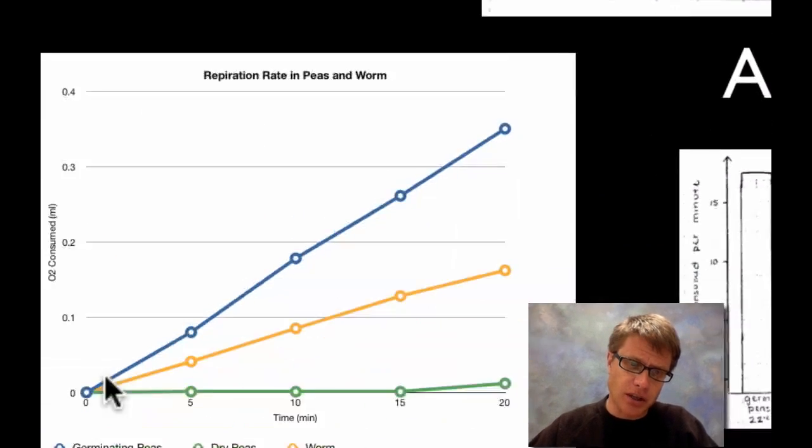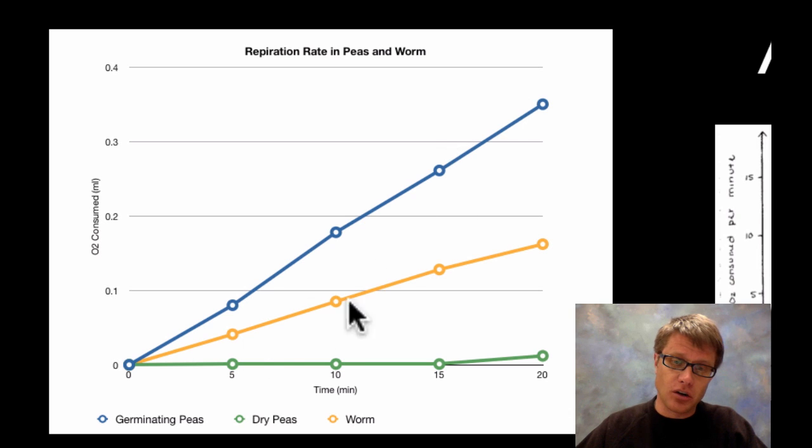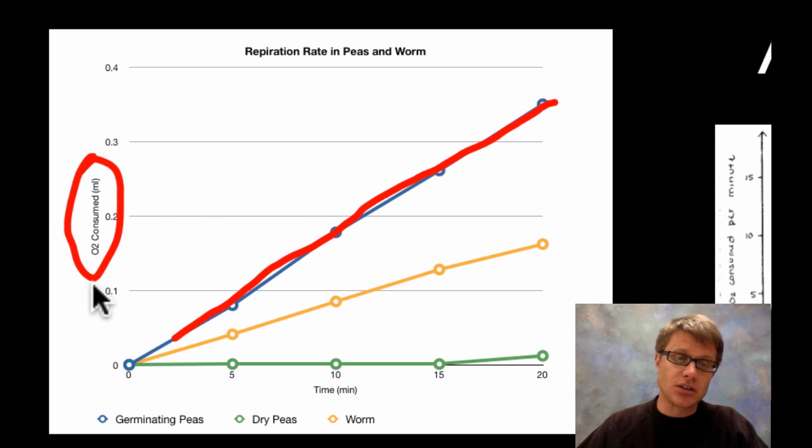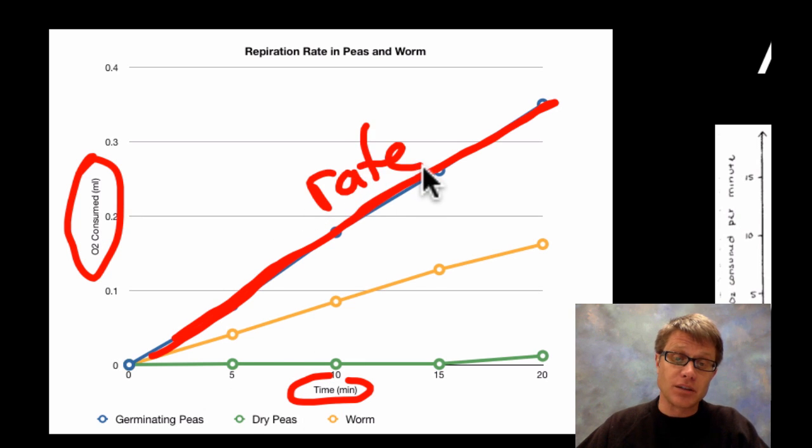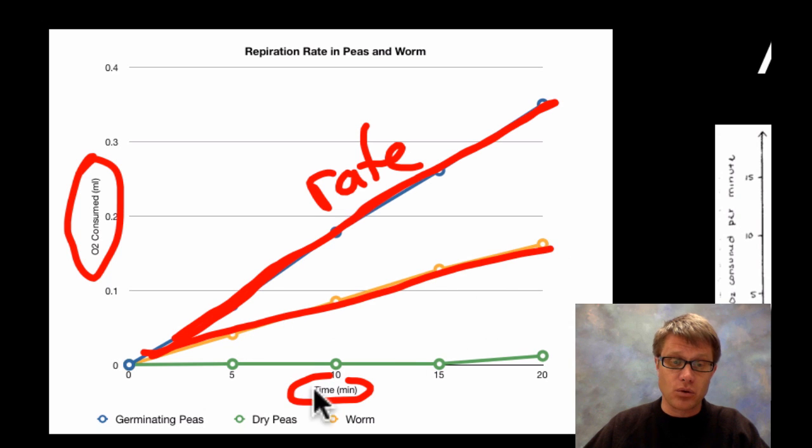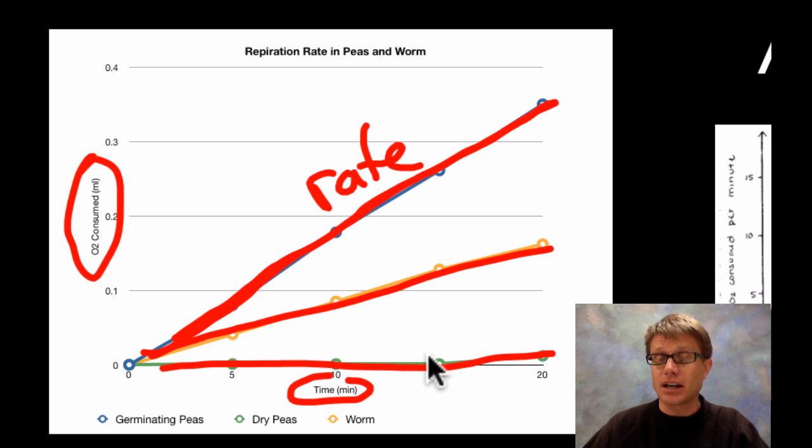But if you look at this person's data what they got is the steepest line, and they should all be linear, is going to be the germinating peas. So the germinating peas are going to have a line like that. So this is the milliliters of oxygen consumed. Then it's going to be time on the bottom. So time in minutes. And so the slope of this line, if I were to figure out the slope of this line in milliliters oxygen consumed over minutes, that's going to be the rate of respiration. We'll find that that's a greater rate than that of the worm and a greater rate than that of the non-germinating peas. And that's because these ones are not activated. They're not doing cellular respiration. If we were to soak them in water then they would start to activate and start to actually do those things.